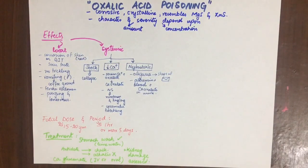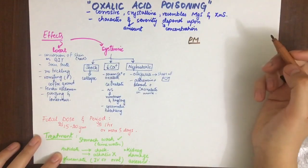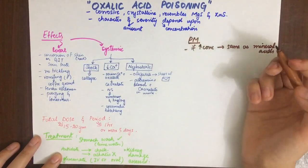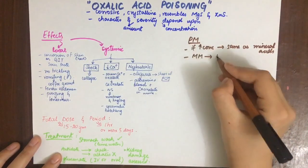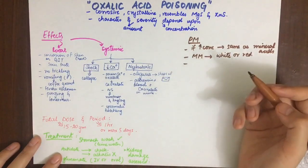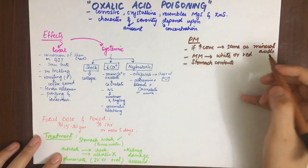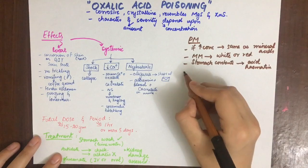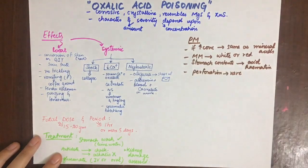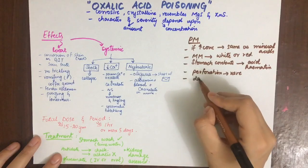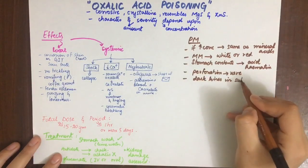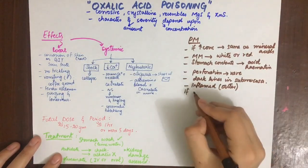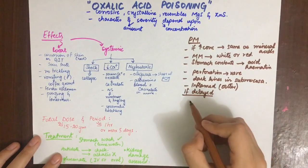In case of death due to oxalic acid poisoning, post-mortem appearances include: if increased concentration of acid is used, findings are similar to mineral acids, except lips and chin do not show staining. The mucous membrane is white or red — white when bleached and red when irritated. Acid hematin is formed, causing stomach contents to appear as dark brown gelatinous liquid. Perforation is rare. The submucosa of the stomach has dark lines due to blood vessels, and the outer coat of the stomach is inflamed.